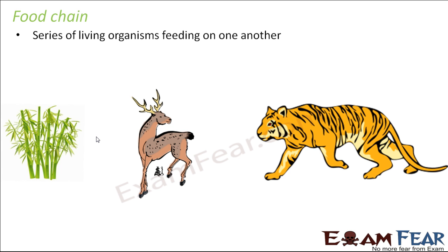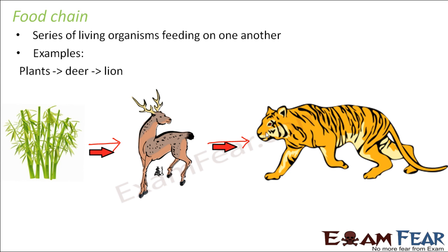A food chain is a series of living organisms feeding on one another — a sequence where the first organism is eaten by the second, the second by the third, and so on. On screen you can see a simple food chain: plants are eaten by a deer, which is eaten by the tiger. So this is a three-organism food chain.